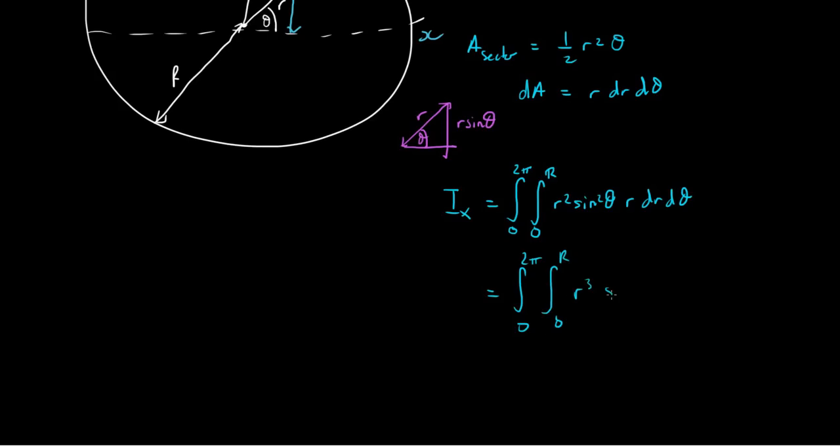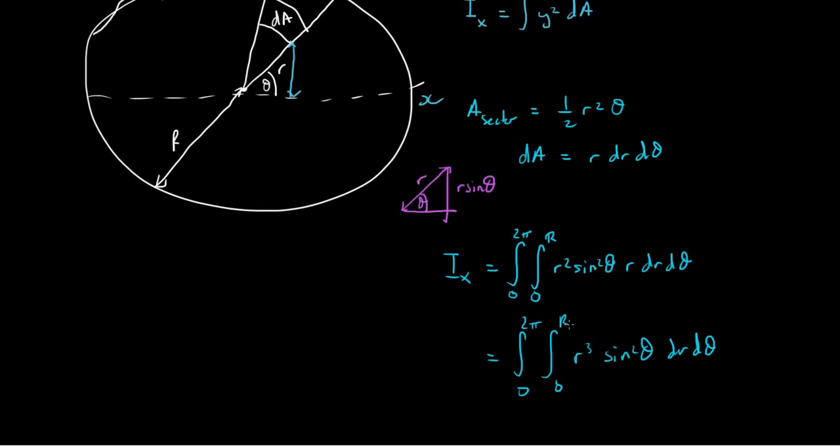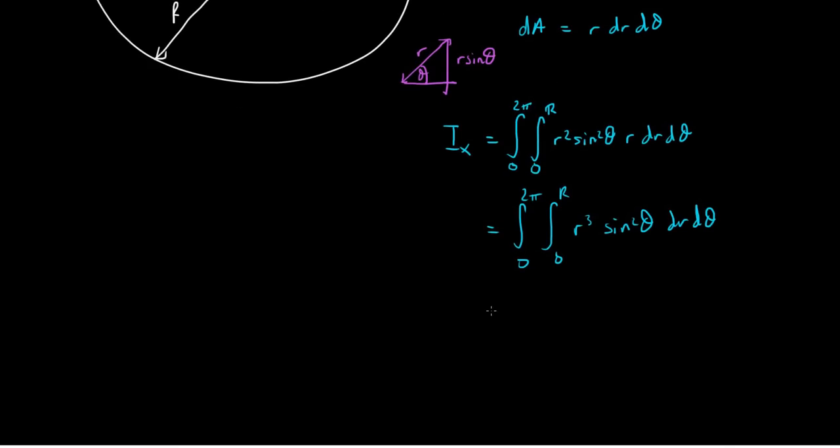Again, just to justify limits, we're evaluating the sector first from 0 to the radius. And then we're evaluating these all the way around from 0 to 2pi. Okay. So, dealing with double integrals, we deal with the inner integral first, then we deal with the outer integral.